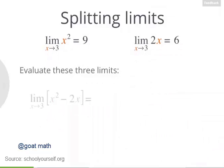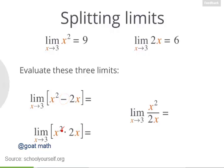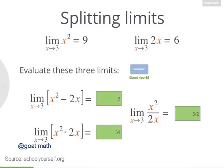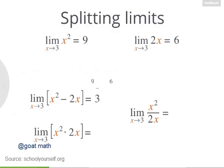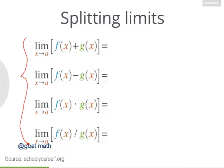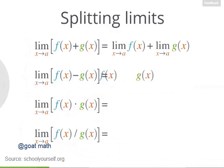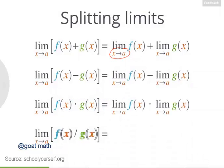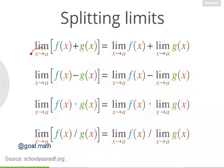Next, let's try evaluating the limit of the difference, the product, and the quotient of these two functions. As x approaches 3, the limit of the difference is 3, which is 9 minus 6; the limit of the product is 54, which is 9 times 6; and the limit of the quotient is 1.5, which is 9 divided by 6. In general, if you have limits of sums, differences, products, or quotients, you can split up the limits — just make sure both limits are approaching the same x coordinate as the original limit.